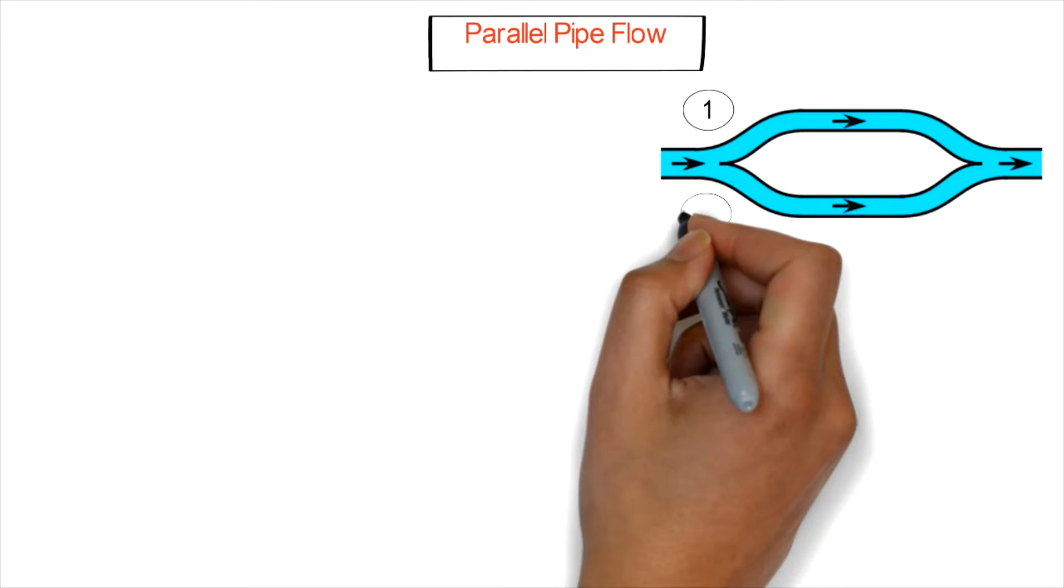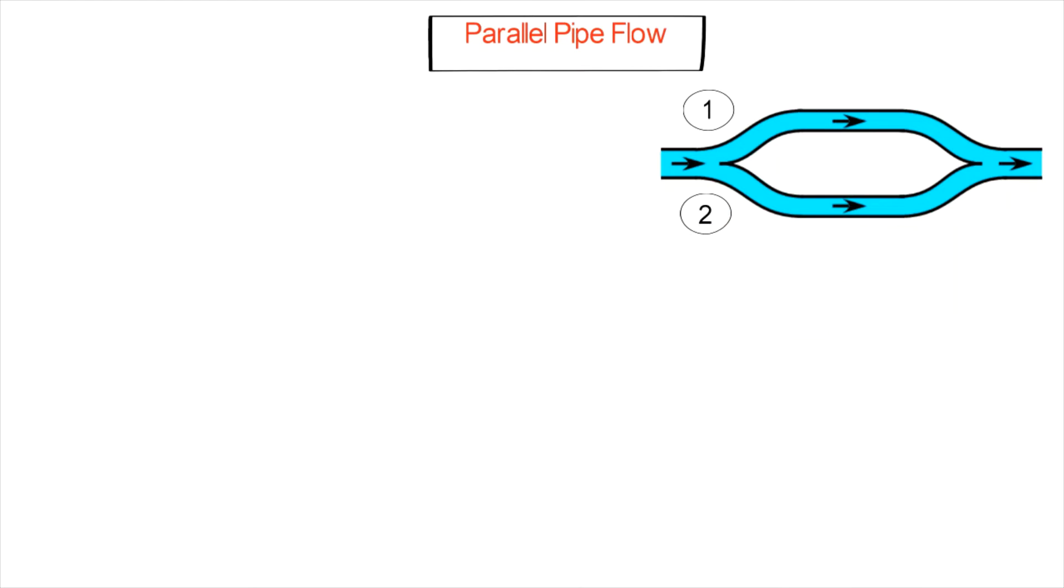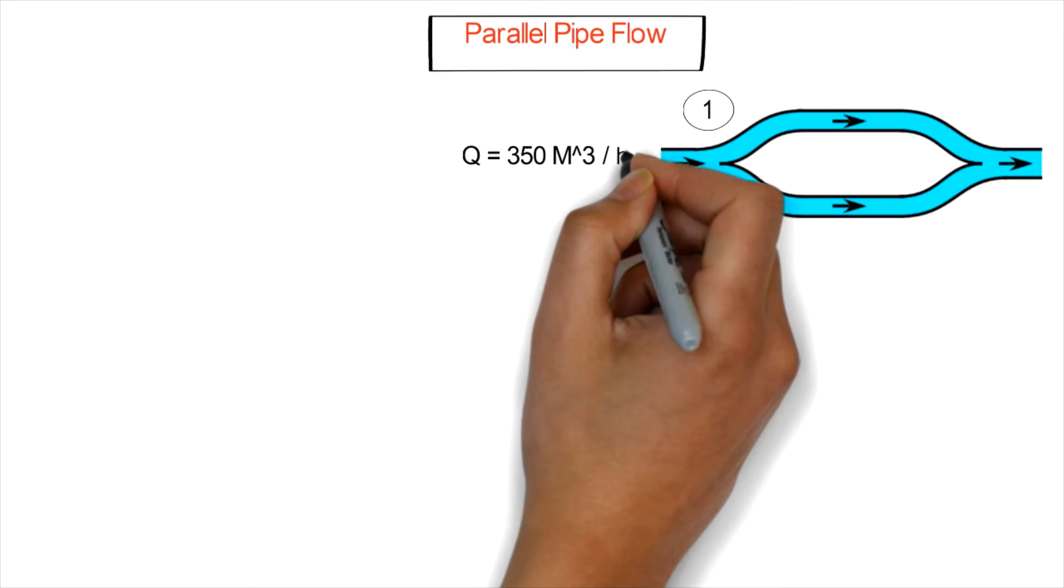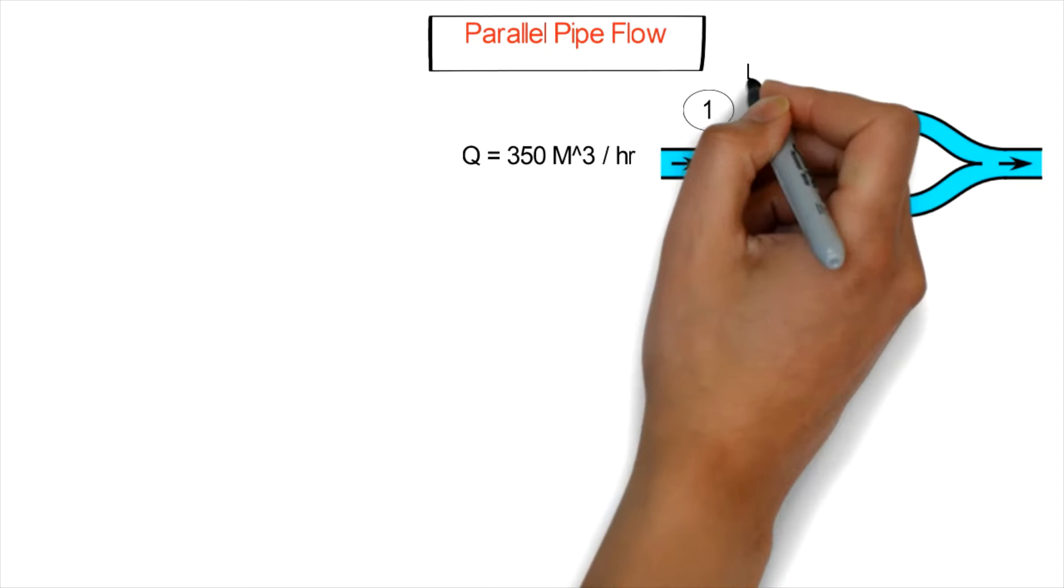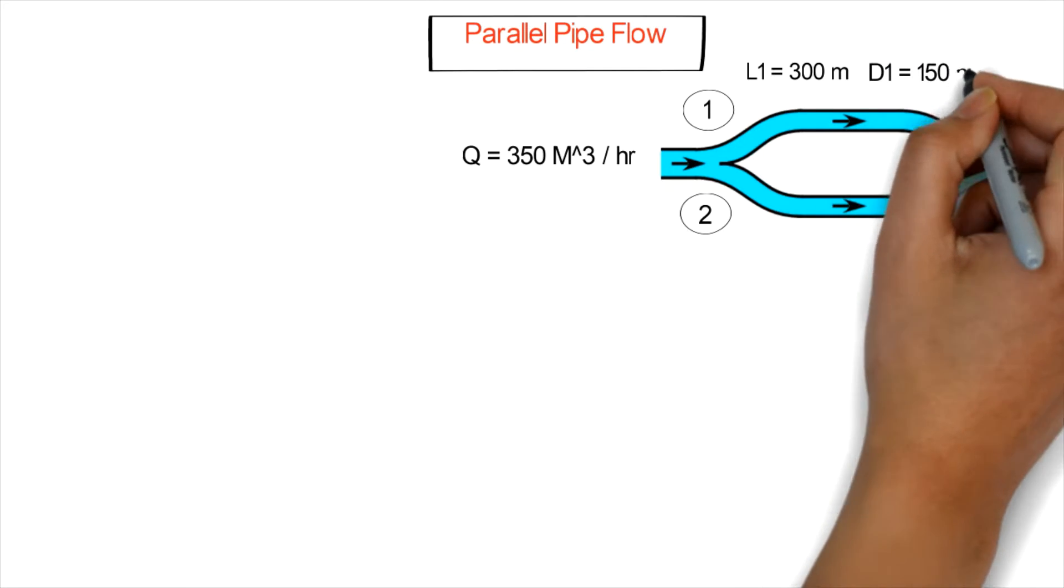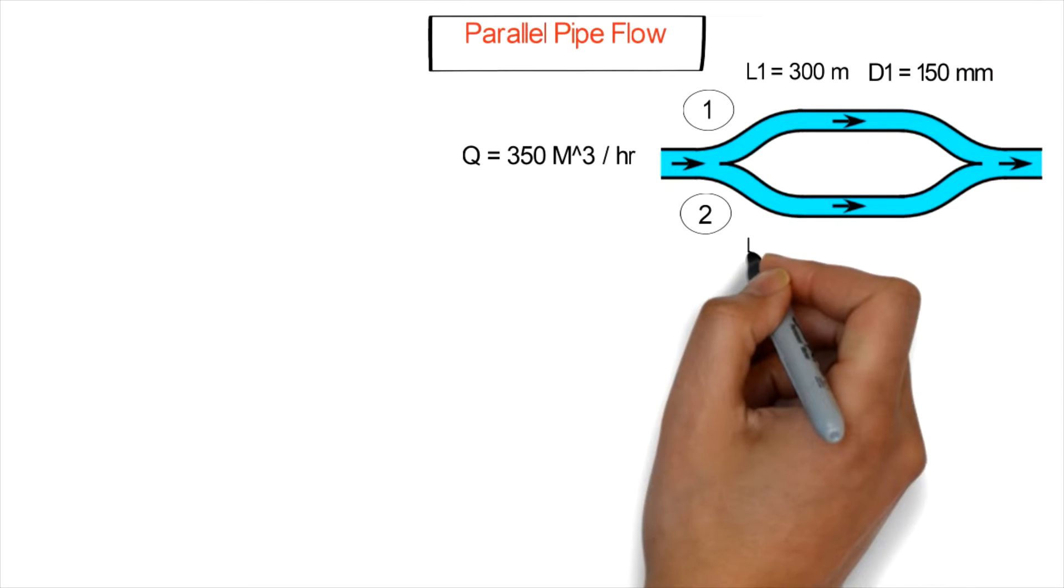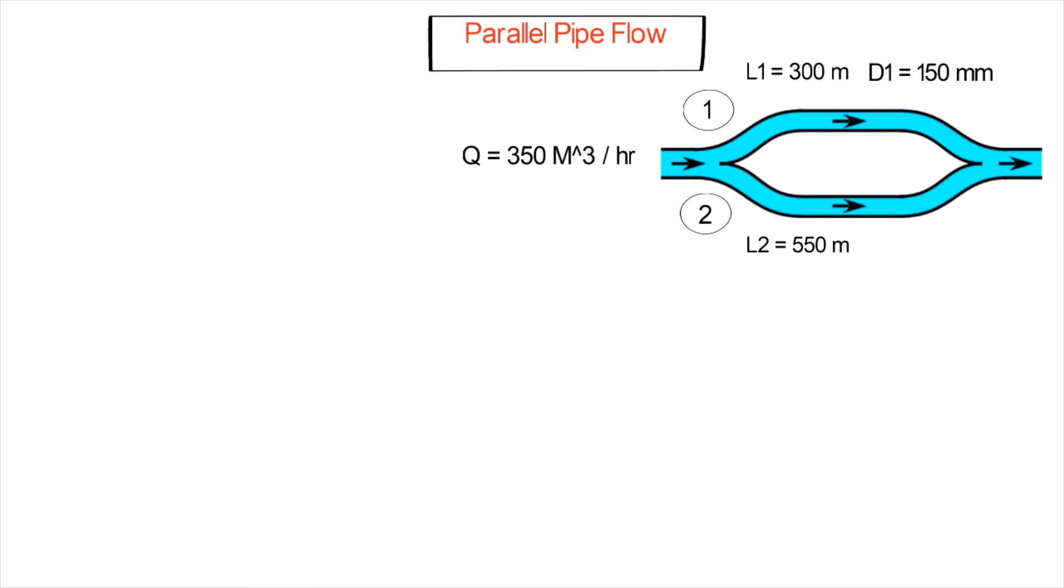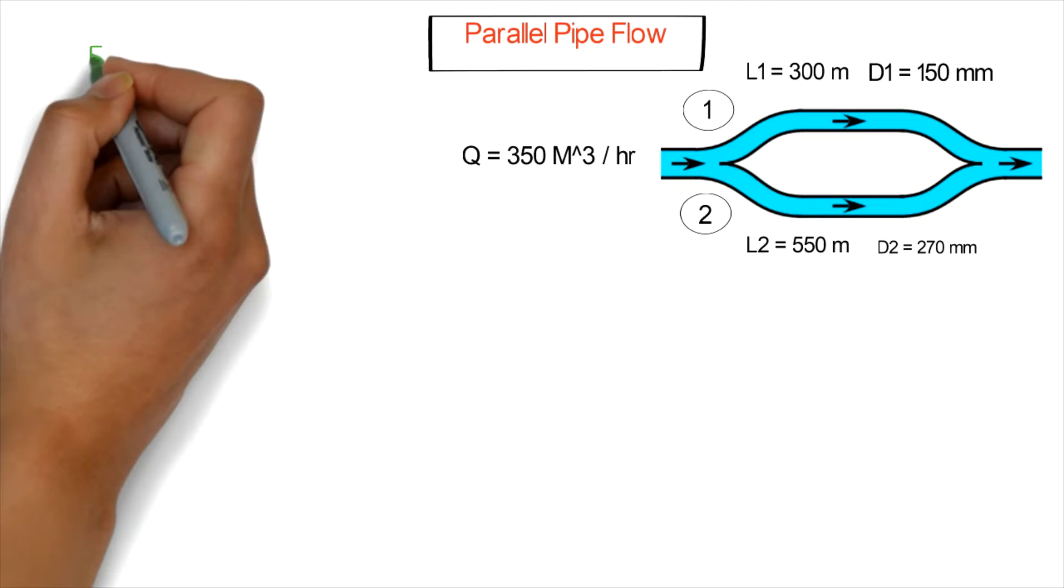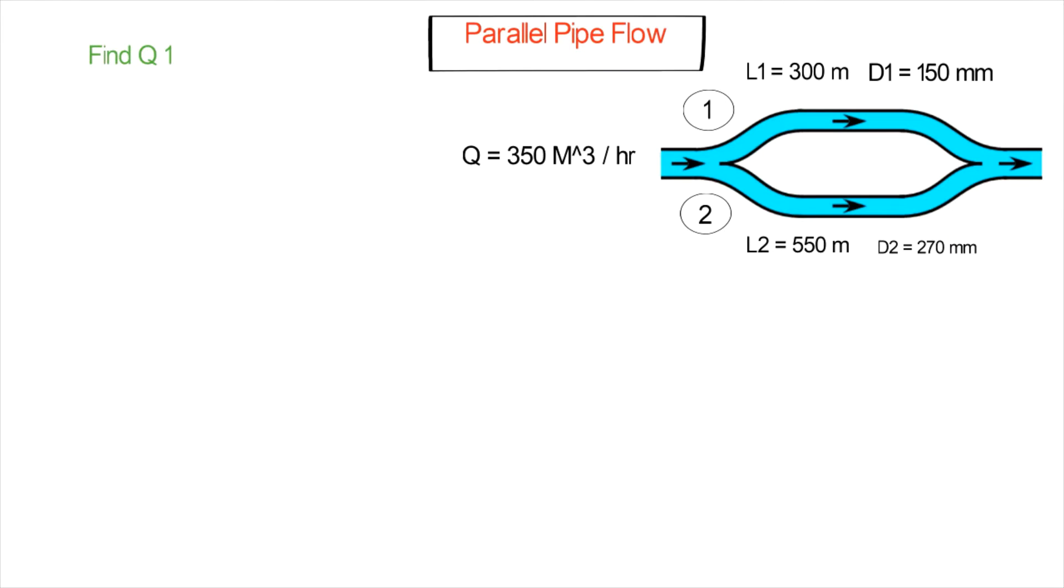The outlet flow rate Q equals 350 cubic meters per hour, which equals 0.097 cubic meters per second. Pipe one has length L1 equals 300 meters and diameter D1 equals 150 millimeters.